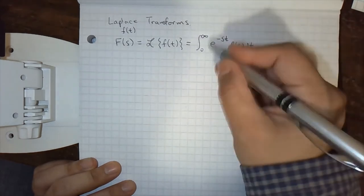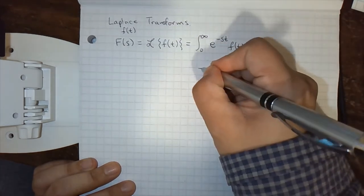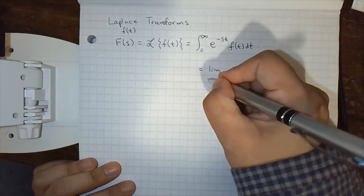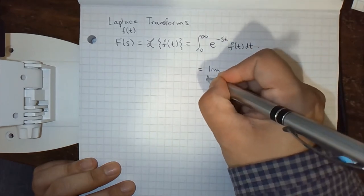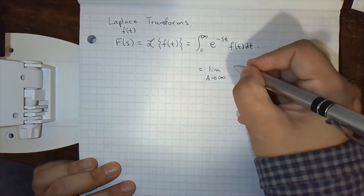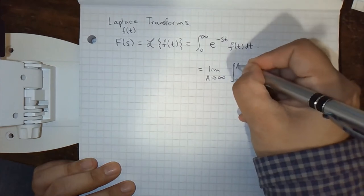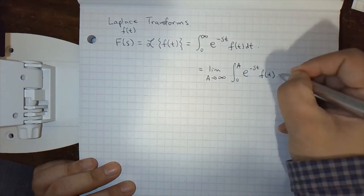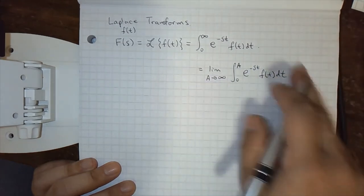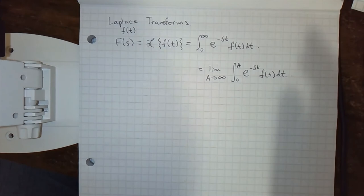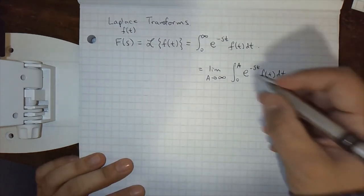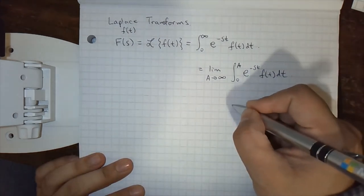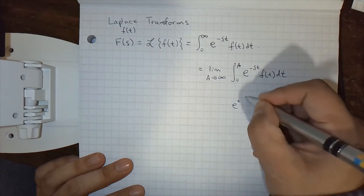A couple things to note. This is an improper integral. So if you remember from integral calculus, this is defined as the limit as a goes to infinity of the integral from 0 to a, e^(-st) f(t) dt. You don't necessarily have to write this step. But the thing to avoid writing is, for example, you end up with e^t, and then you're plugging in bounds, right? 0 to infinity.